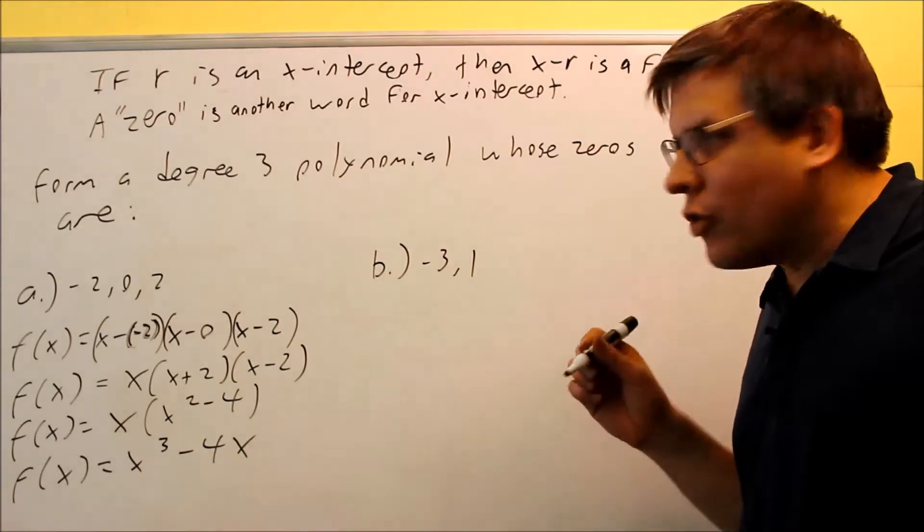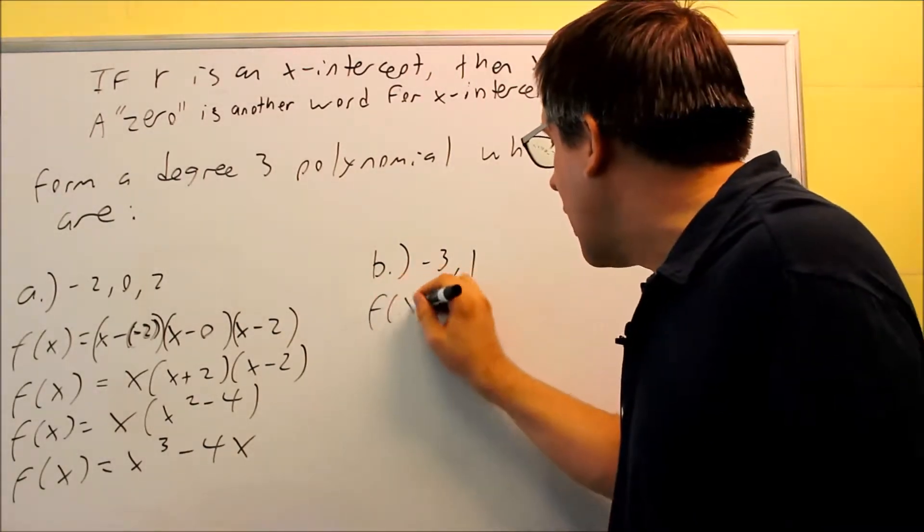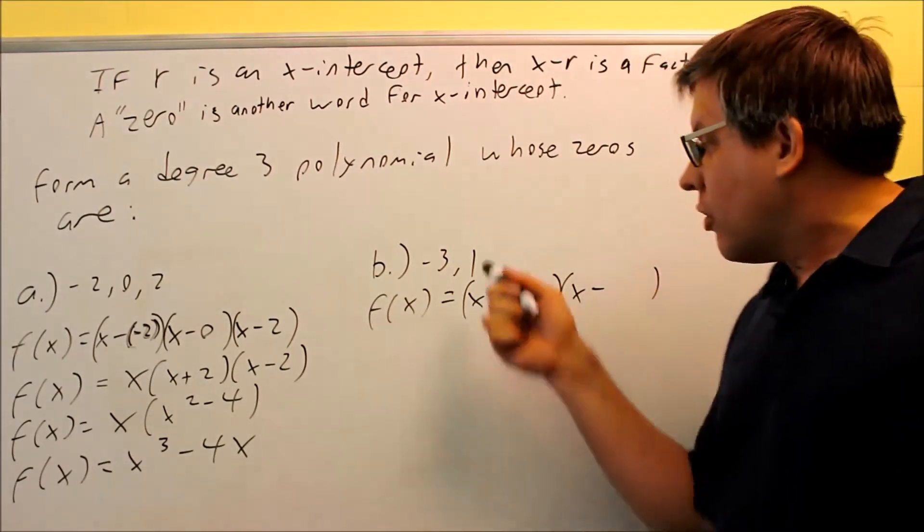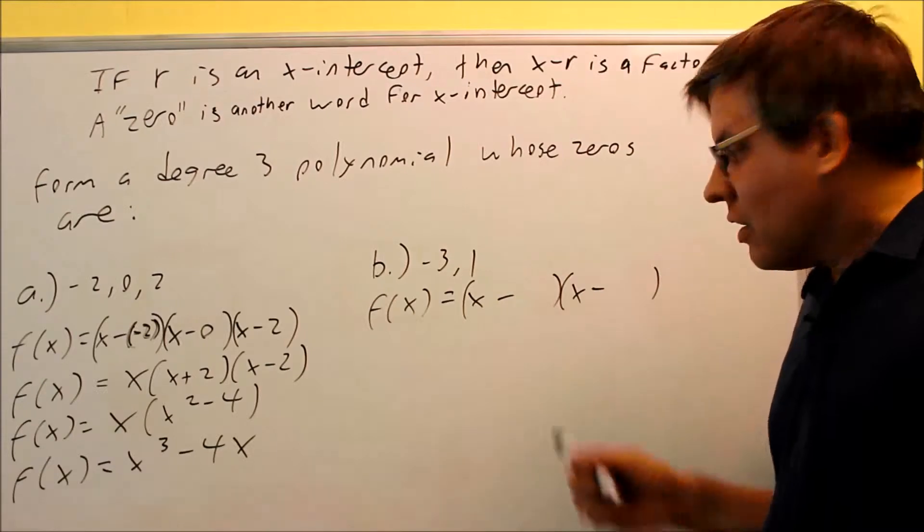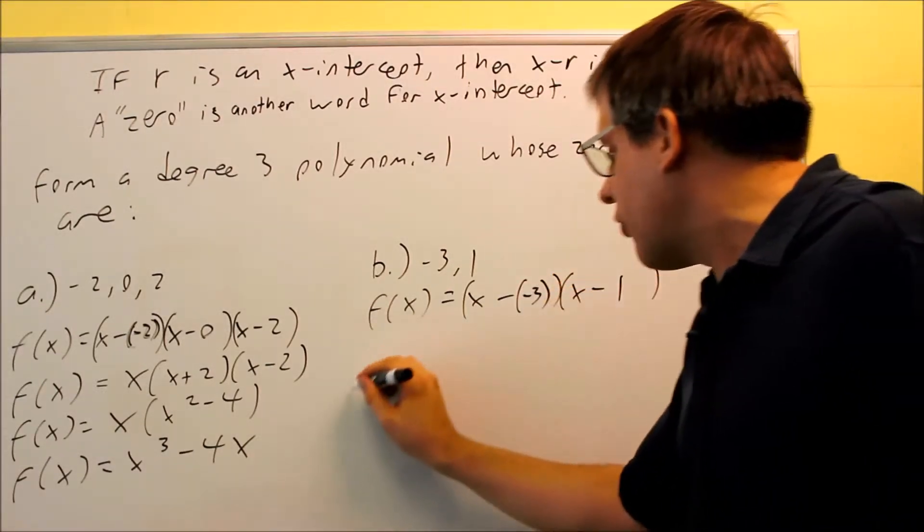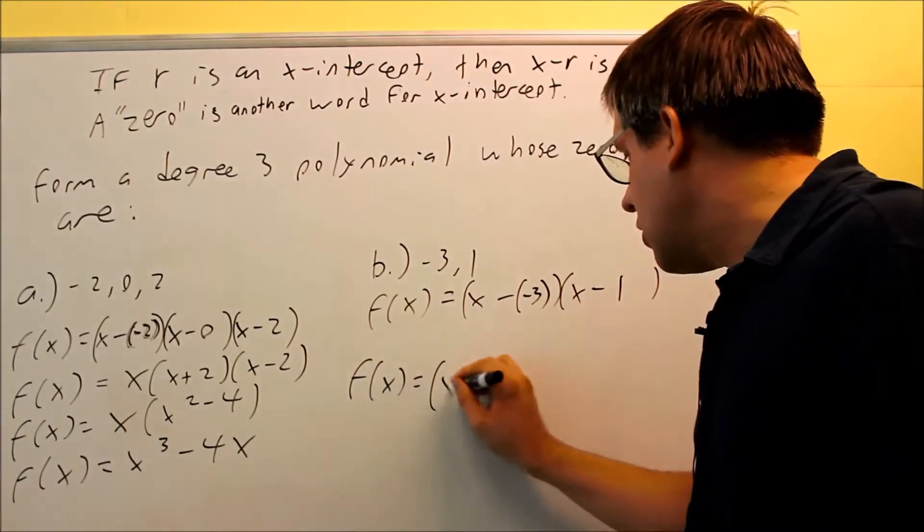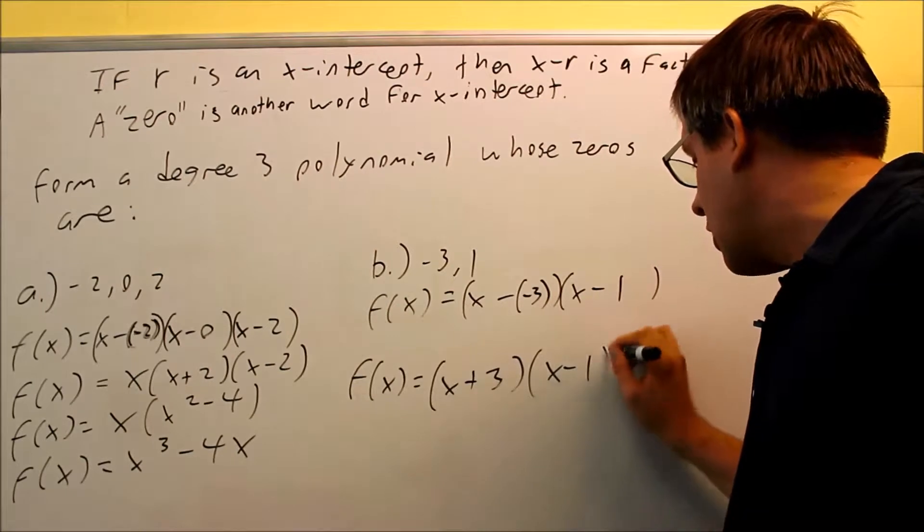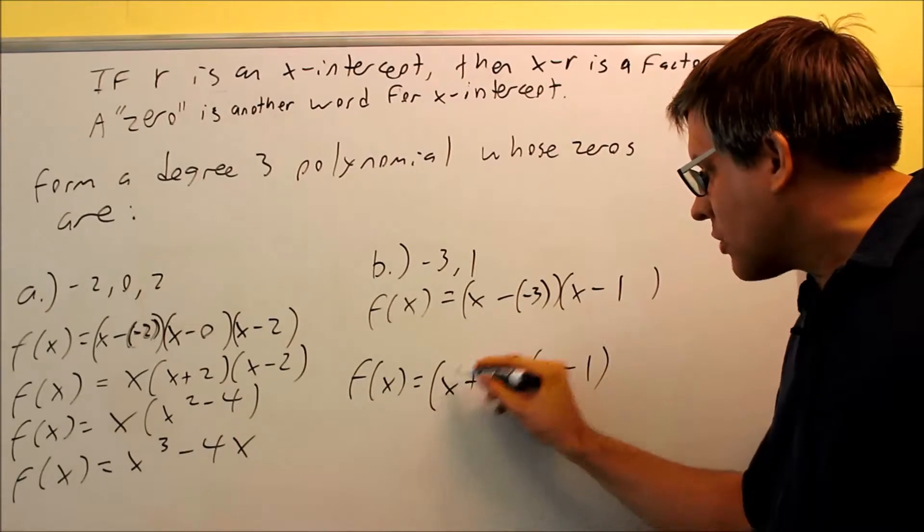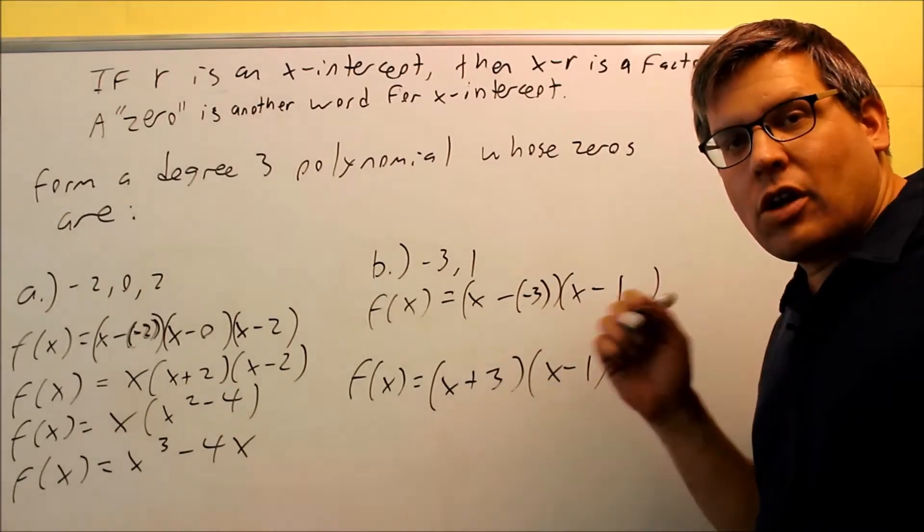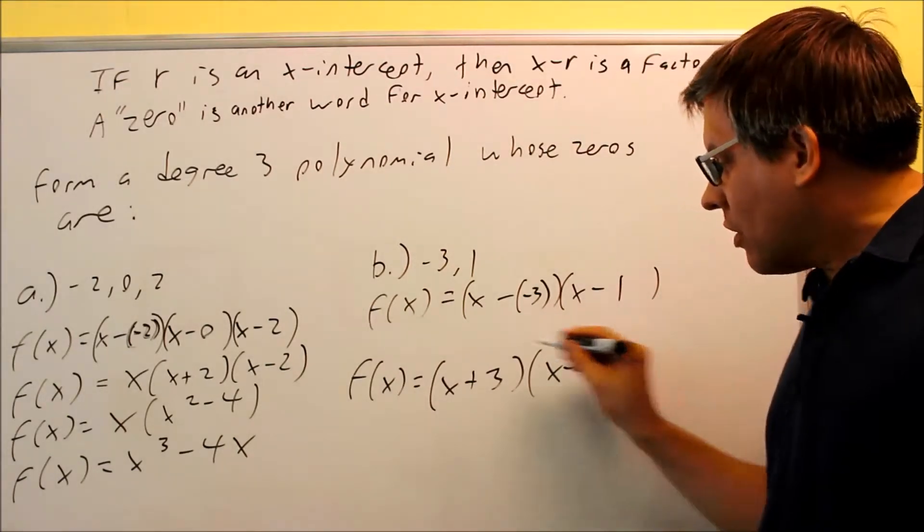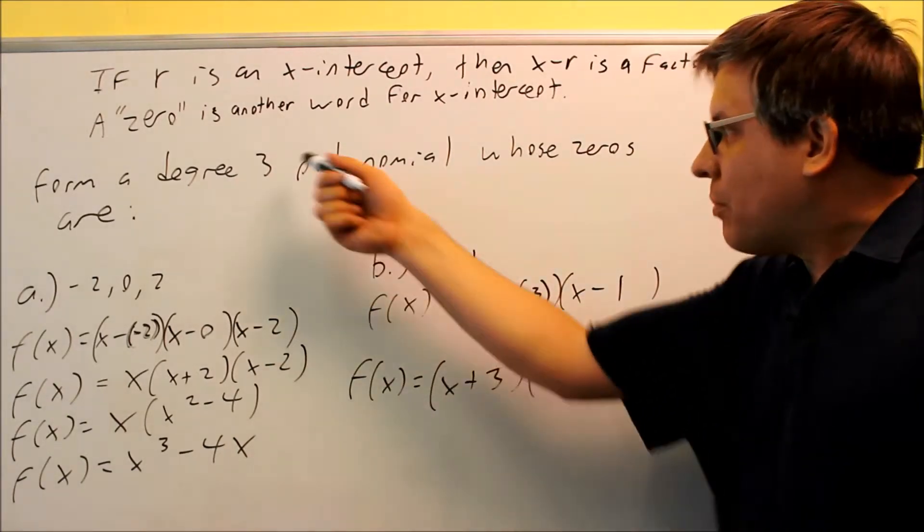Let's take a look at part B. So if we do it the same way, we do f of x equals, and then again you always do x minus whatever the 0 or the x-intercept is that you're given, and then we put in negative 3, and then I put in a 1. And so if I simplify it, then you get x plus 3, and x minus 1. So we have a problem with this one. The problem is if I multiply this out, I'm only going to get x squared. I want to get a third power out of that. So we have to modify this somehow in order to get a power of 3.